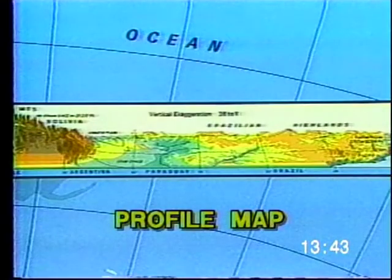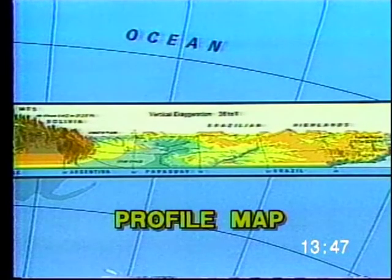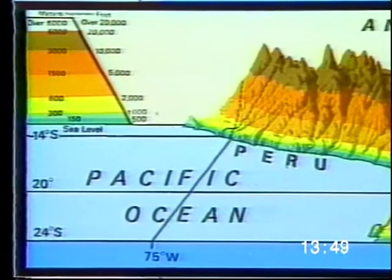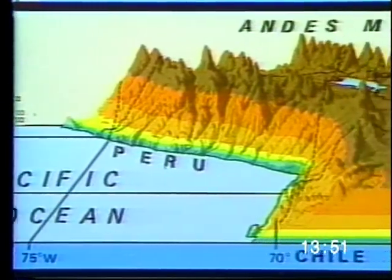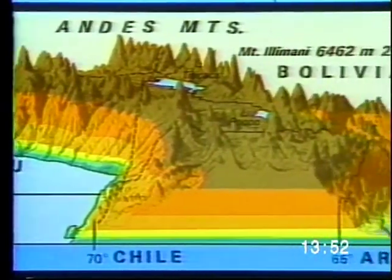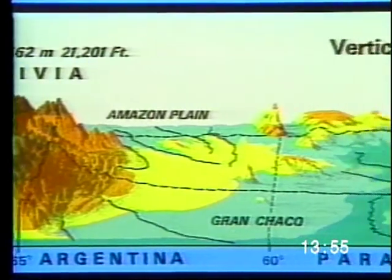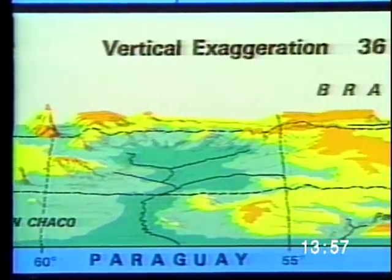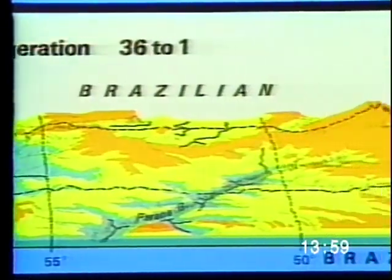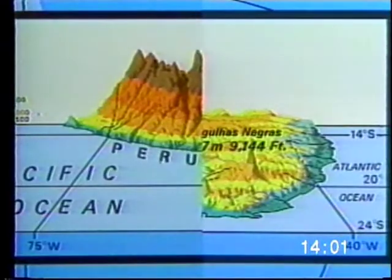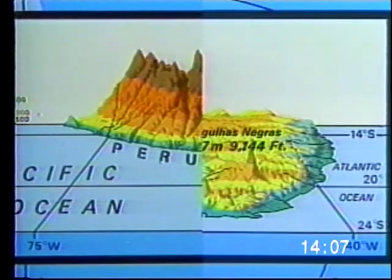Another very different looking map is the profile map, or cross-section diagram. These maps cut a land area in two so that you can see the area from a side view. They show how the land varies in altitude or elevation, and the general shape of the land forms. As we can see from this profile map of South America, the Andes Mountains on the west coast are much higher than the Brazilian highlands on the east coast.